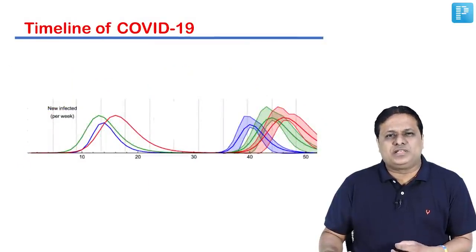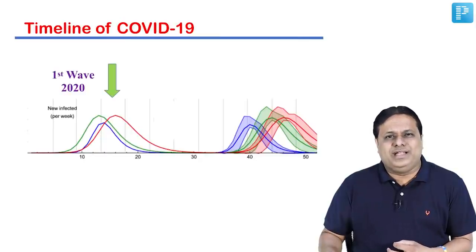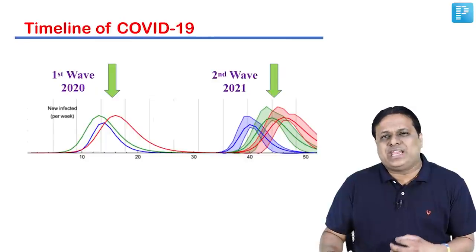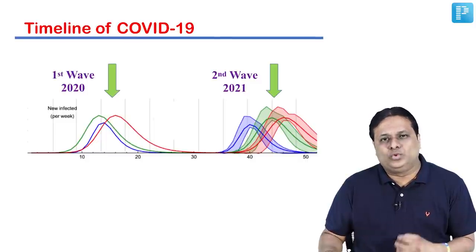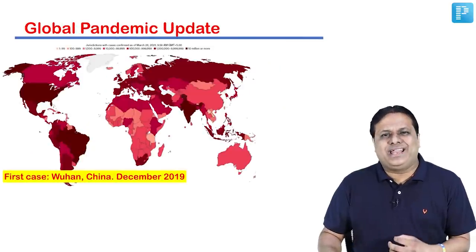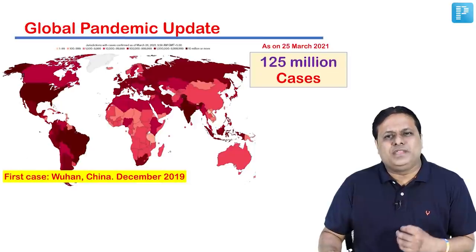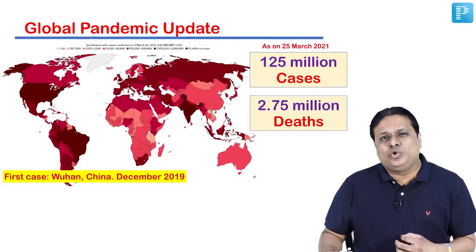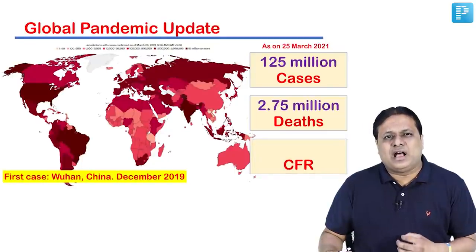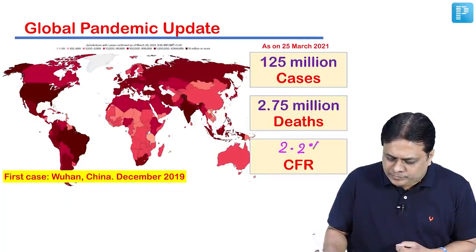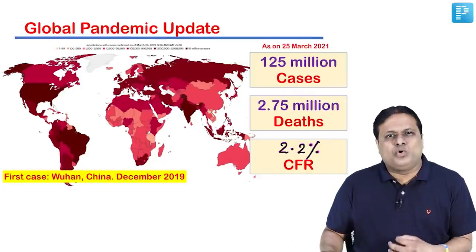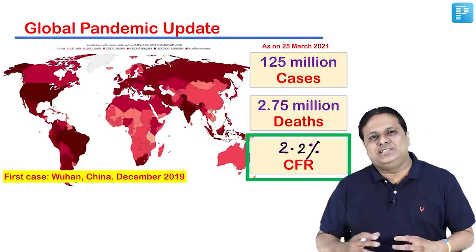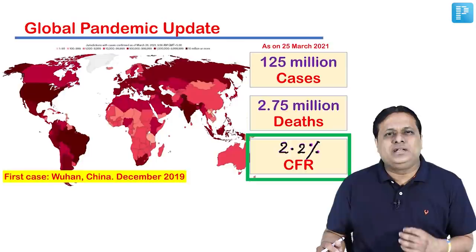There was a first global wave of pandemic COVID-19 in 2020, and as this video is being recorded, a second wave is ongoing in many countries including India in 2021. Globally, till end of March 2021, 125 million cases have been reported and around 2.75 million deaths have occurred, giving a case fatality rate of 2.2%. Take-home point: the case fatality rate of SARS-CoV-2 is more than 2% currently.